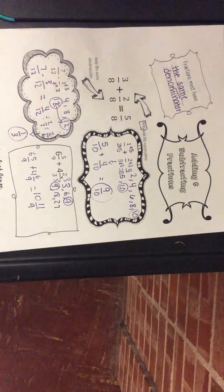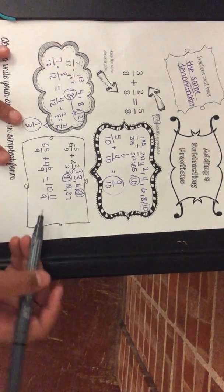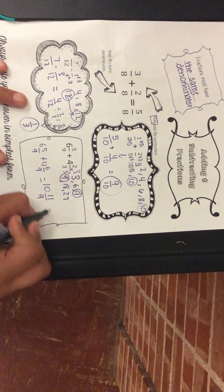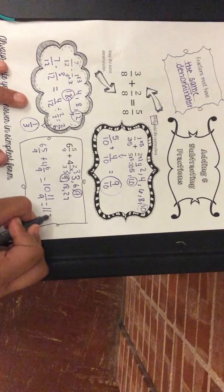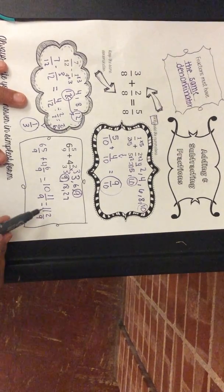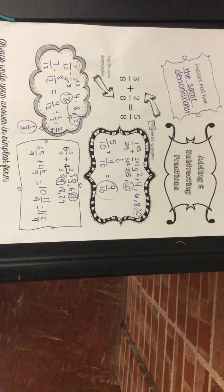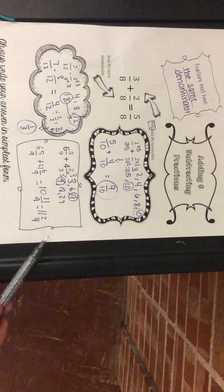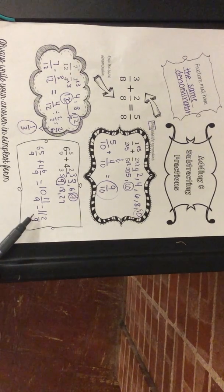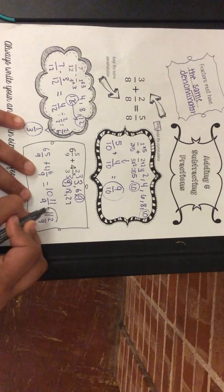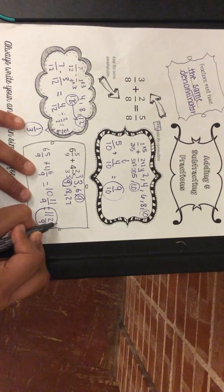Now we add: six plus four equals ten for the whole number, and five plus six equals eleven for the numerator, giving ten and eleven over nine. But you can't have an improper fraction like eleven over nine in a mixed number. Subtract nine from eleven to get two, and carry the one to the whole number: ten plus one equals eleven. Your answer is eleven and two ninths.